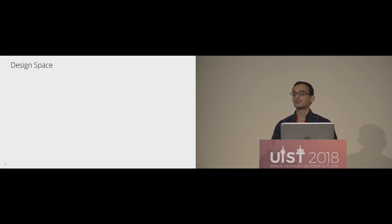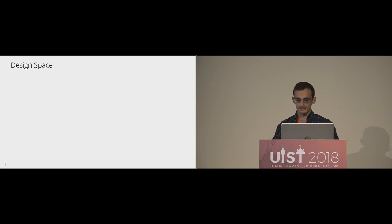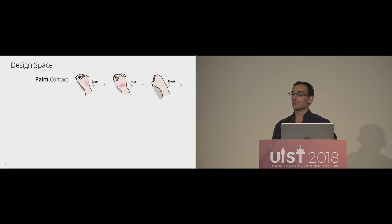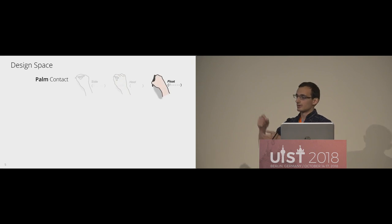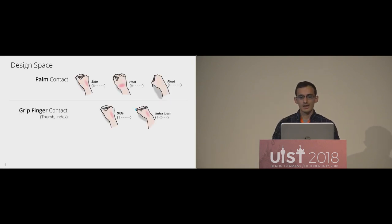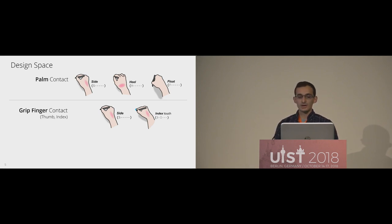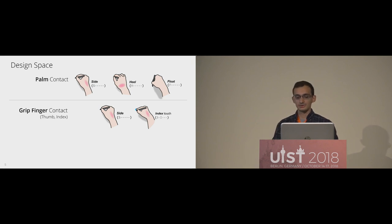For the posture design space, we defined each posture in terms of six variables: the state of the palm and the state of each of the fingers. For the palm, we had three possible states: the side of your hand resting on the screen, the heel of your hand resting on the screen, or floating where only the pen tip is touching the screen. For the first two fingers — the grip fingers, the thumb and the index — we only have two states, since those fingers are important for maintaining the precision grip.